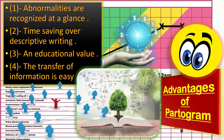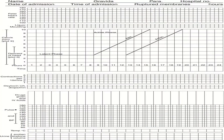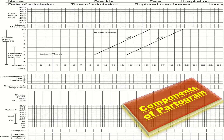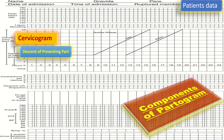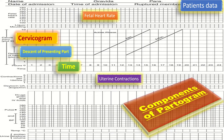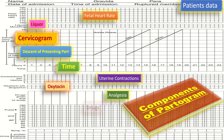What are the components of partogram? The partogram consists of patient data, the cervicogram, descent of presenting part, the time, the fetal heart rate, uterine contraction, oxytocin, liquor, analgesia, drugs, IV fluids, vitals, and the urine record.